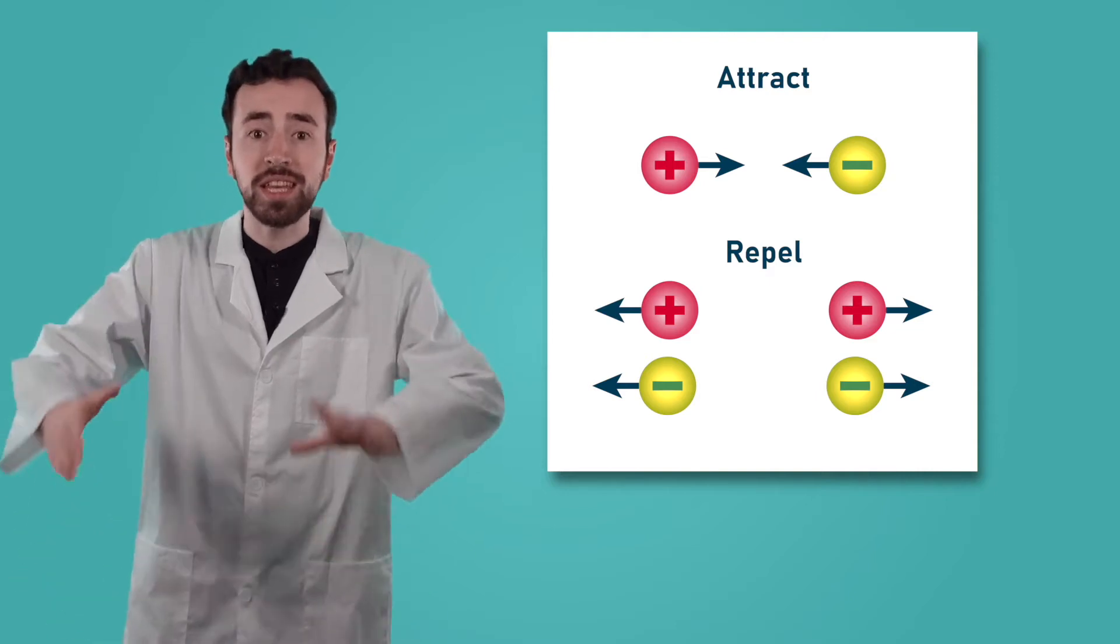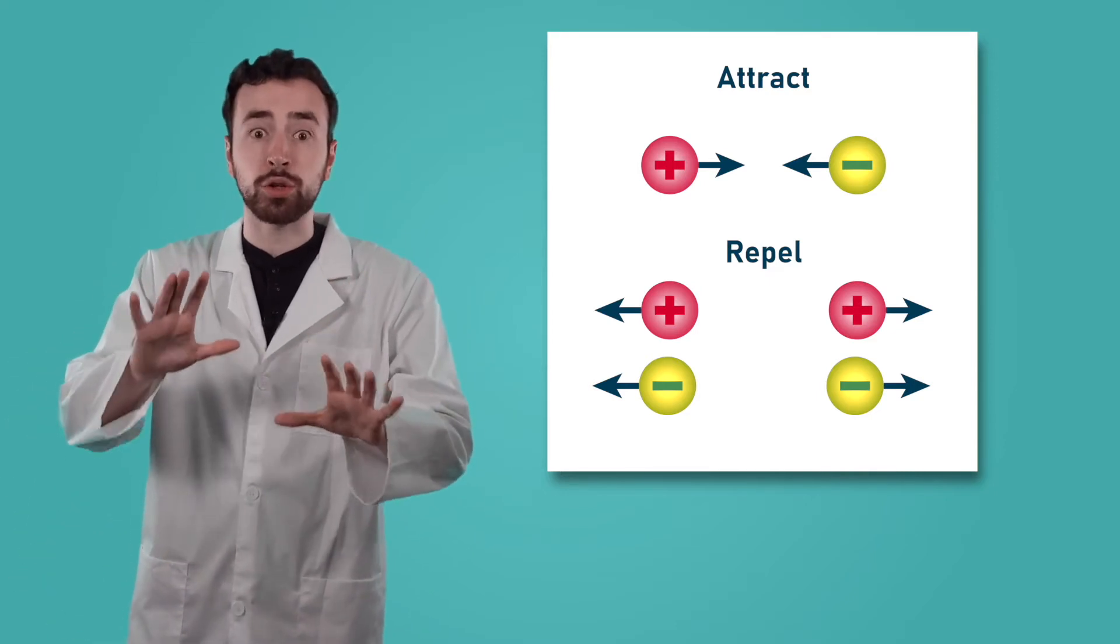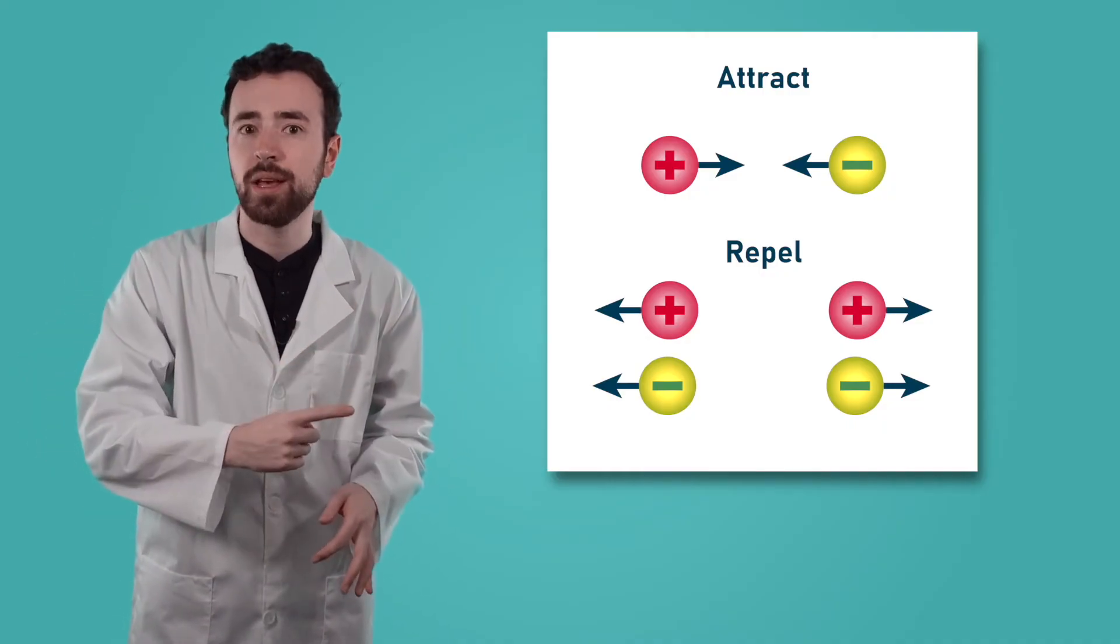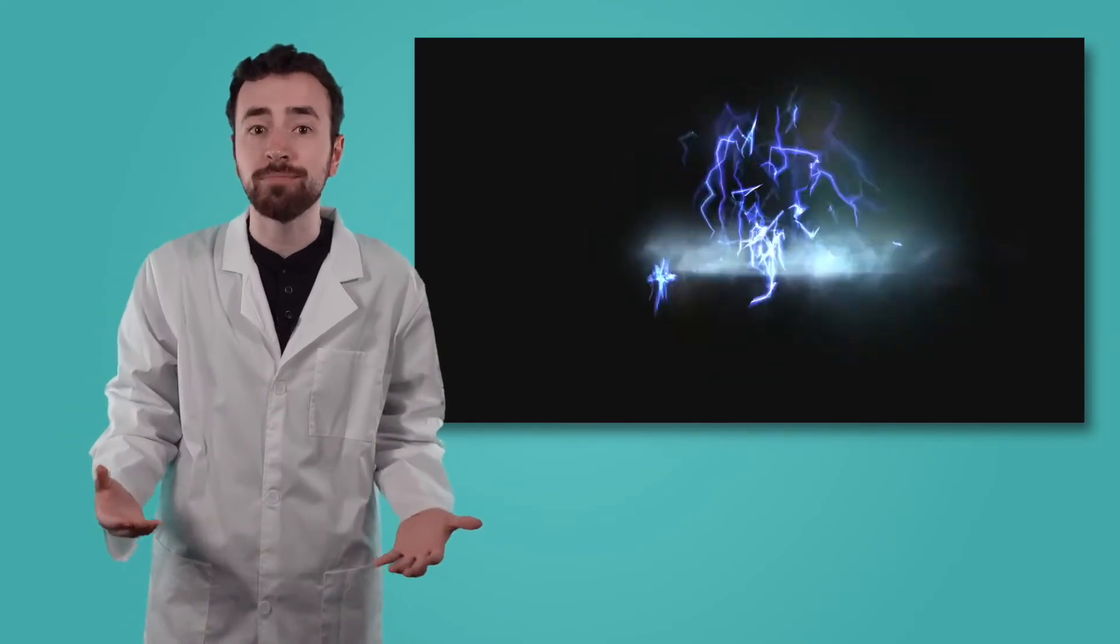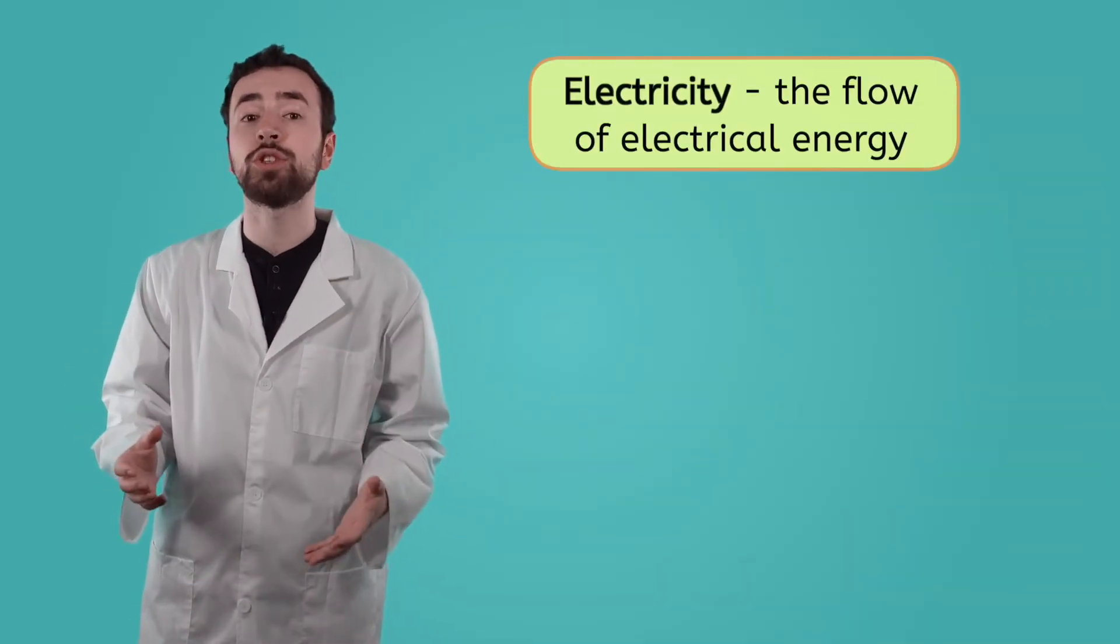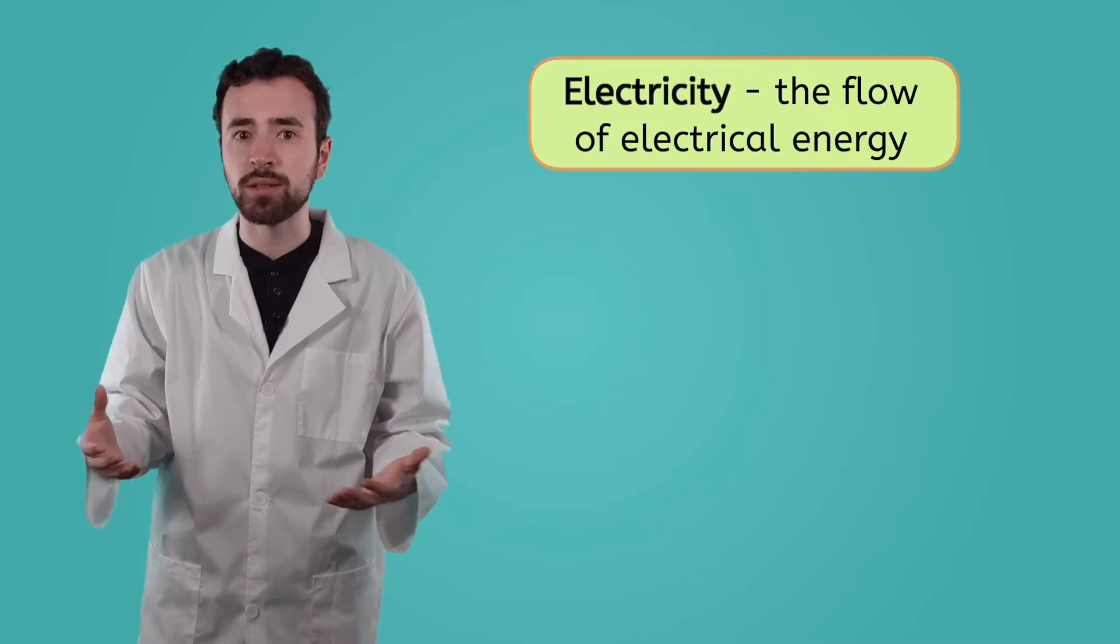Sometimes the forces can even push the electrons that are zooming around and move them between different atoms. That movement, or flow, of electrical energy is what we call electricity. So, electricity is the flow of electrical energy from the movement of electrons between atoms.